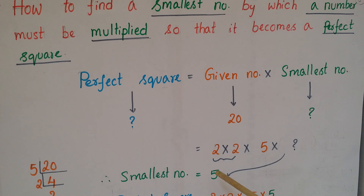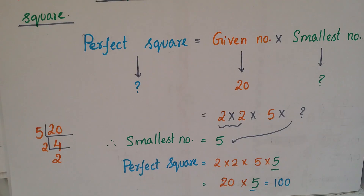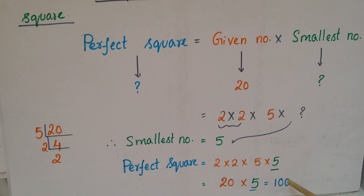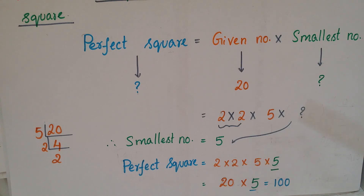If you multiply 20 by 5, we will get a perfect square. Perfect square = 20 × 5 = 100. So 100 is a perfect square because we can write 100 as 10 squared. The smallest number is 5 and the perfect square is 100.